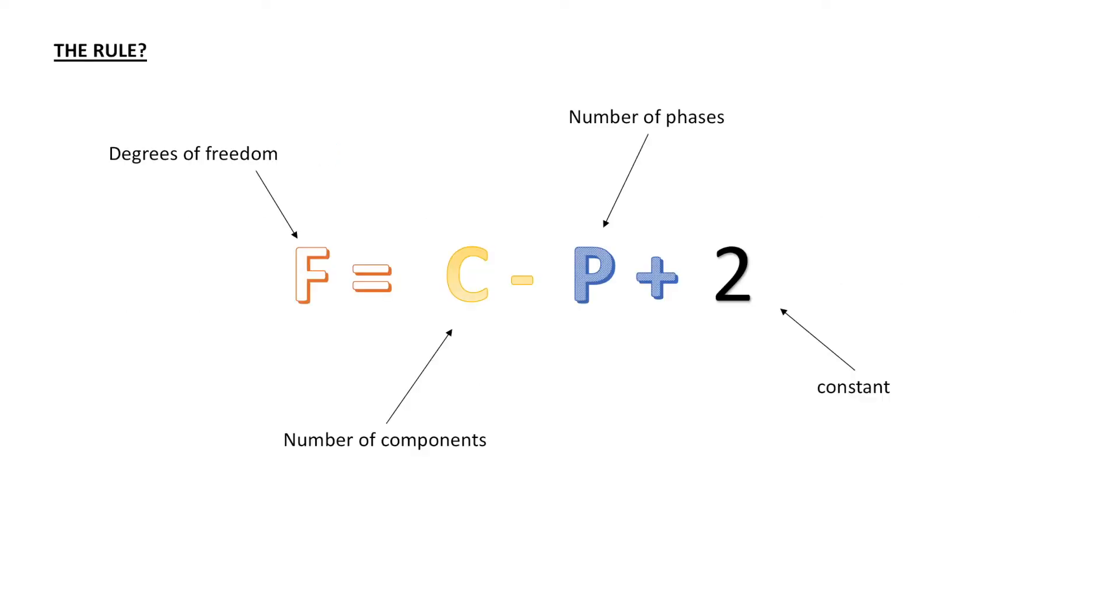In contrast, extensive parameters are those that do scale with the system. In other words, these are parameters that are proportional to the system. Good examples of these include volume and mass—the bigger a system is, the bigger its volume is; they scale. Other examples include things like entropy and enthalpy, and we'll cover those in different presentations.